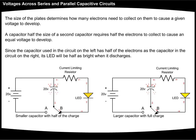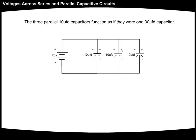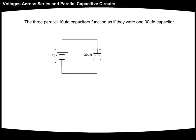Since the capacitor used in the circuit on the left has half of the electrons as the capacitor in the circuit on the right, its LED will be half as bright when it discharges. When capacitors are connected in parallel, a voltage equal to the power supply develops across each of them after the capacitors are completely charged. The three parallel 10 microfarad capacitors function as if they were one 30 microfarad capacitor.